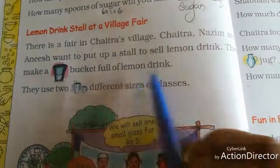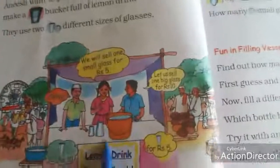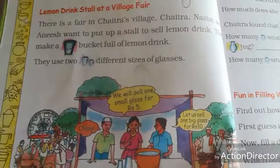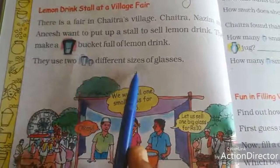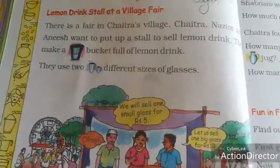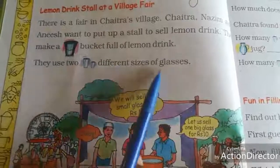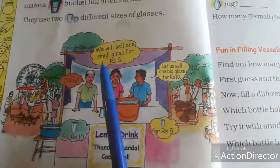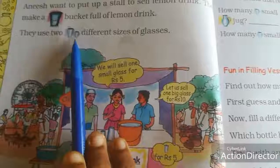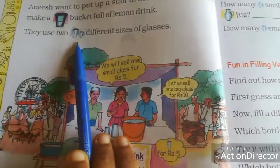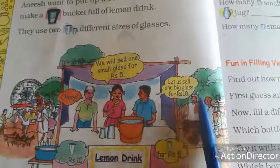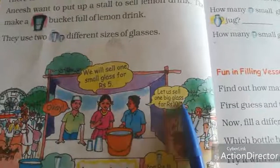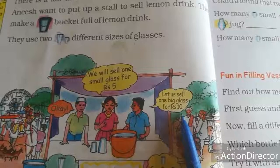They make a bucket full of lemon drink. They use two different sizes of glasses — one big and one small. One small glass of lemon drink costs rupees 5. Anish said, let us sell one big glass for rupees 10.